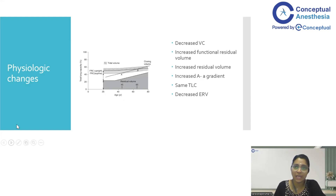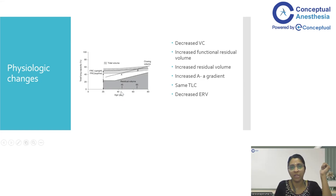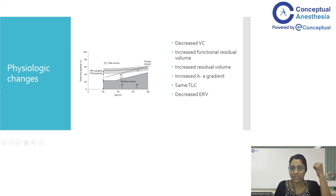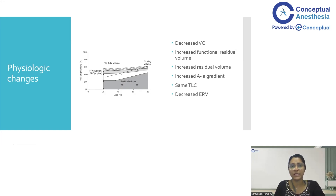The physiological changes in the respiratory system can be seen in this graph, where there is a closing volume and closing capacity. At 45 years of age when the patient is upright, the FRC will reach the closing volume and the patient will not be able to exhale further. At 65 years of age, even when the patient is standing, the closing volume will approach the FRC and hence the patient will have room air desaturation.